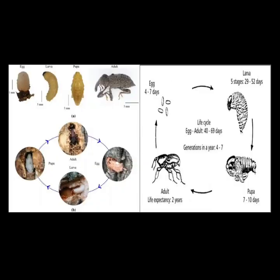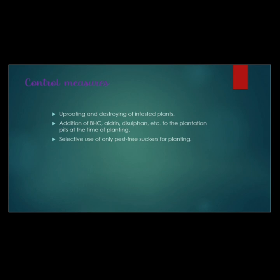Control measures include uprooting and destroying infested plants, and destroying diseased plants. Additionally, the addition of BHC, aldrin, disulfoton, and endosulfan to plantation pits at the time of planting is recommended.